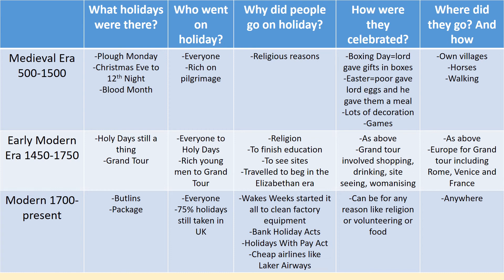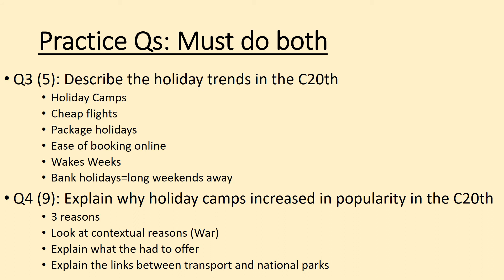Pause the video and note down anything you are missing. Now we have two practice questions and you must do both. The first is a Question 3 for five marks: describe the holiday trends in the 20th century. Some ideas to think about include holiday camps like Butlin's, cheap flights, package holidays, ease of booking online, wakes weeks, and bank holidays that meant long weekends away.